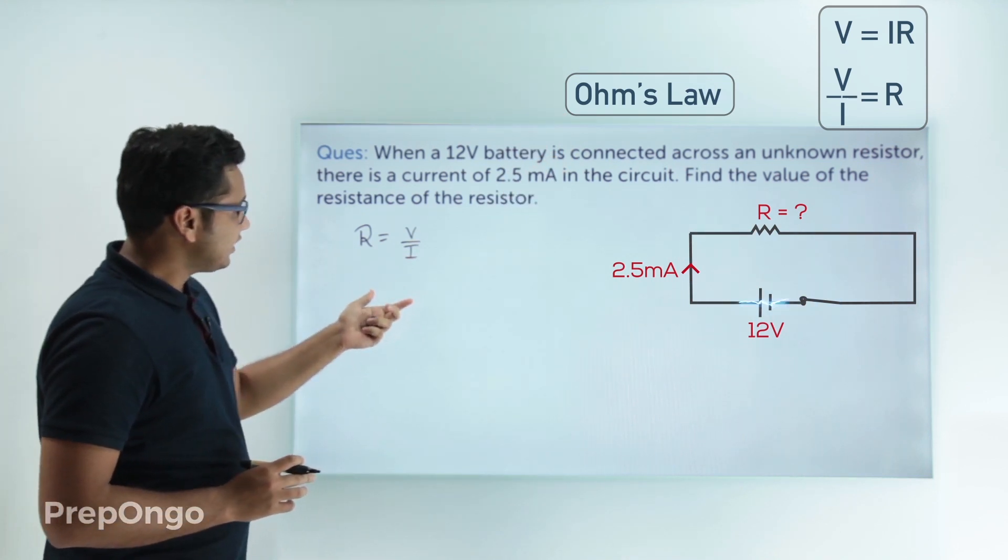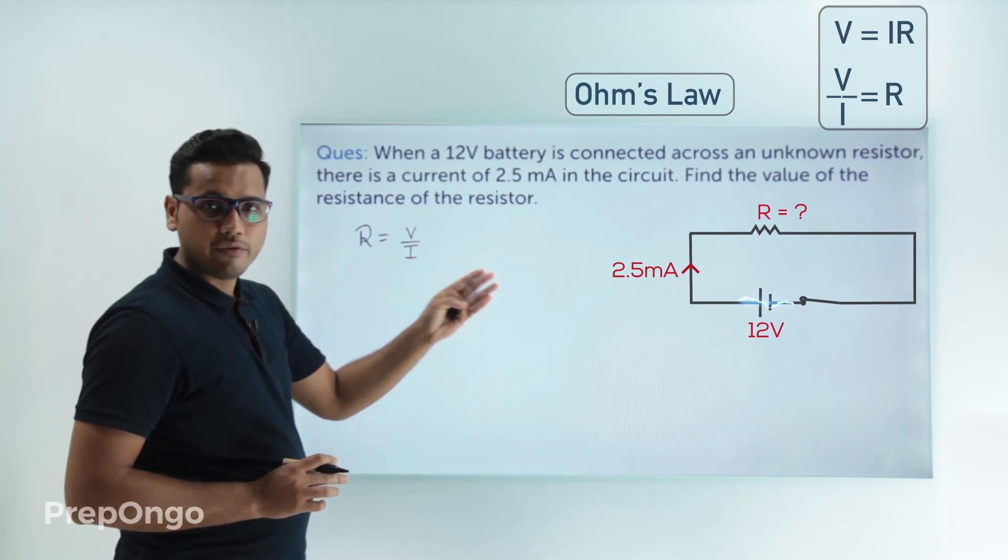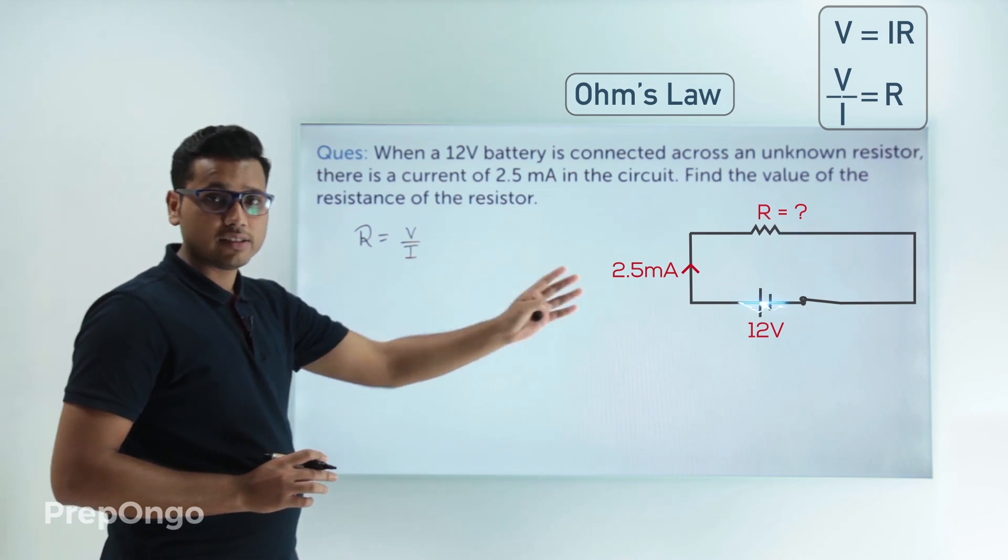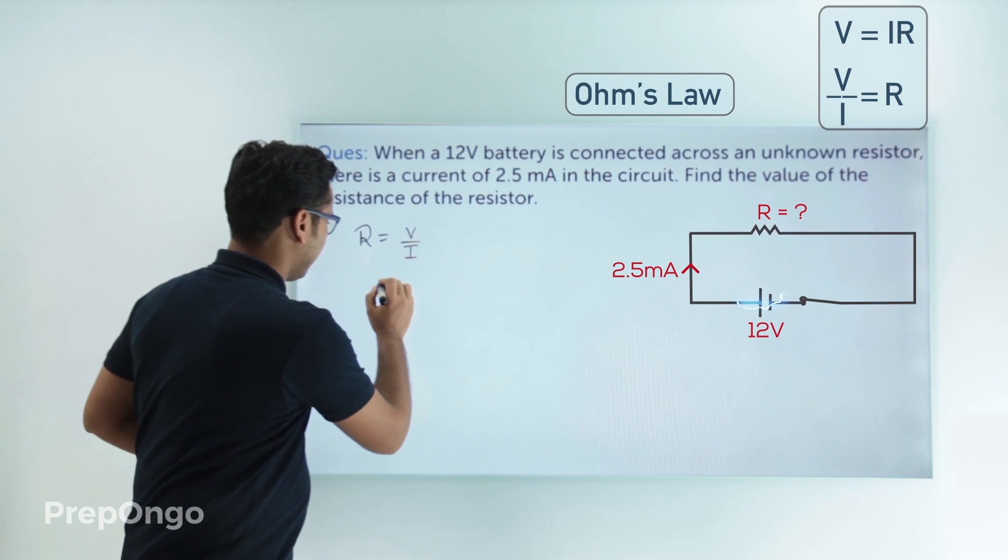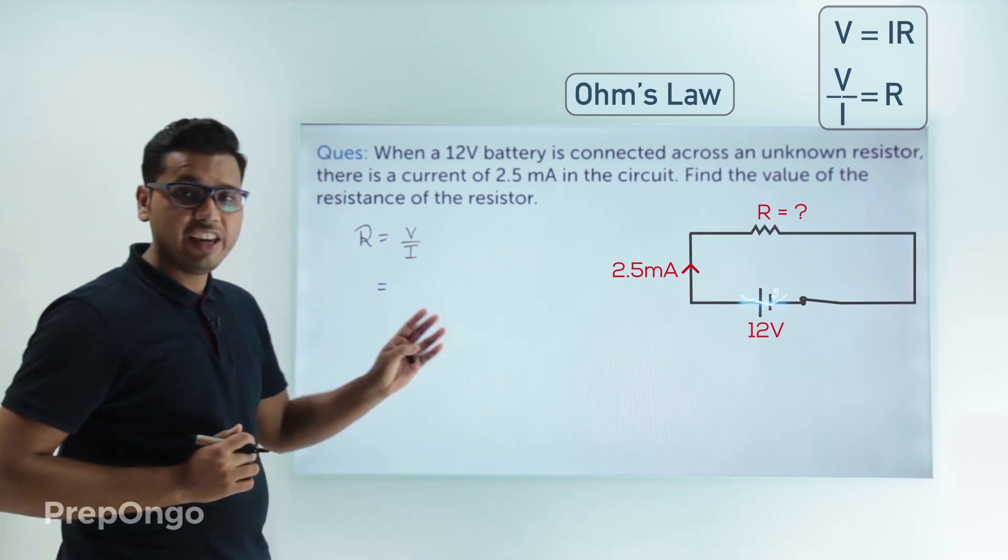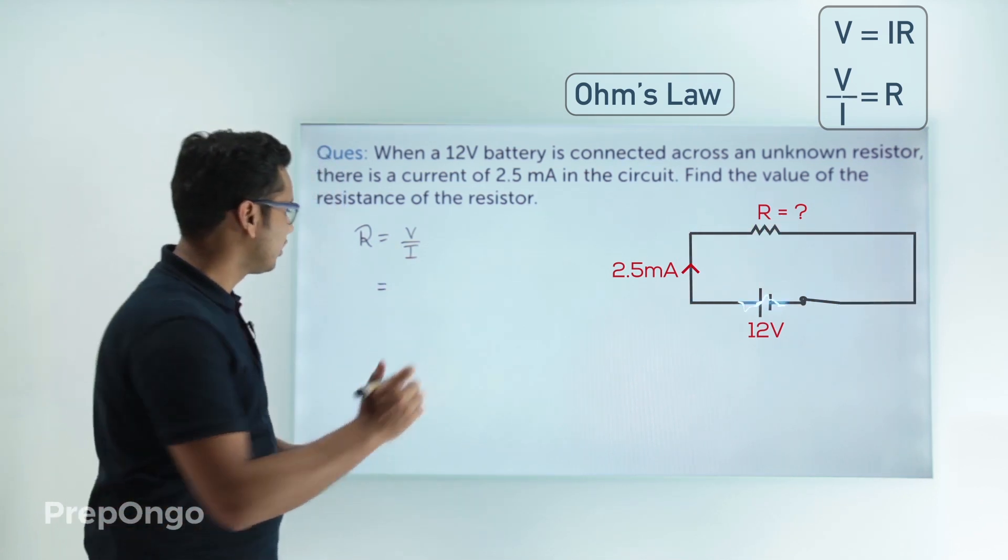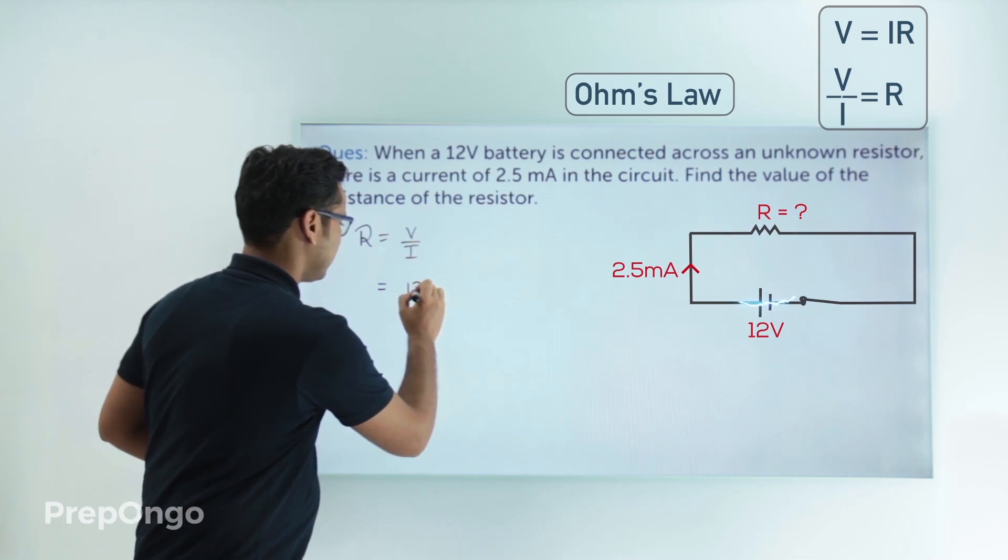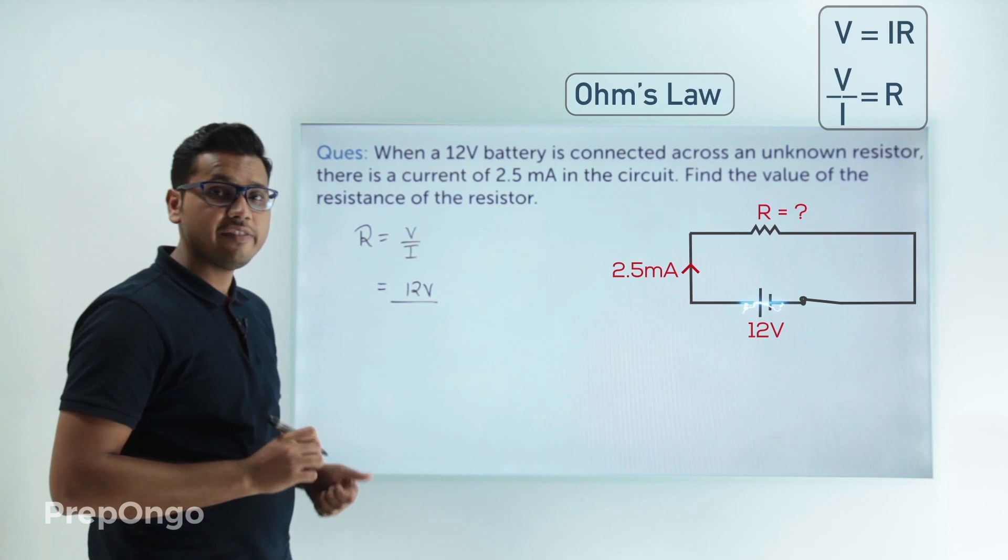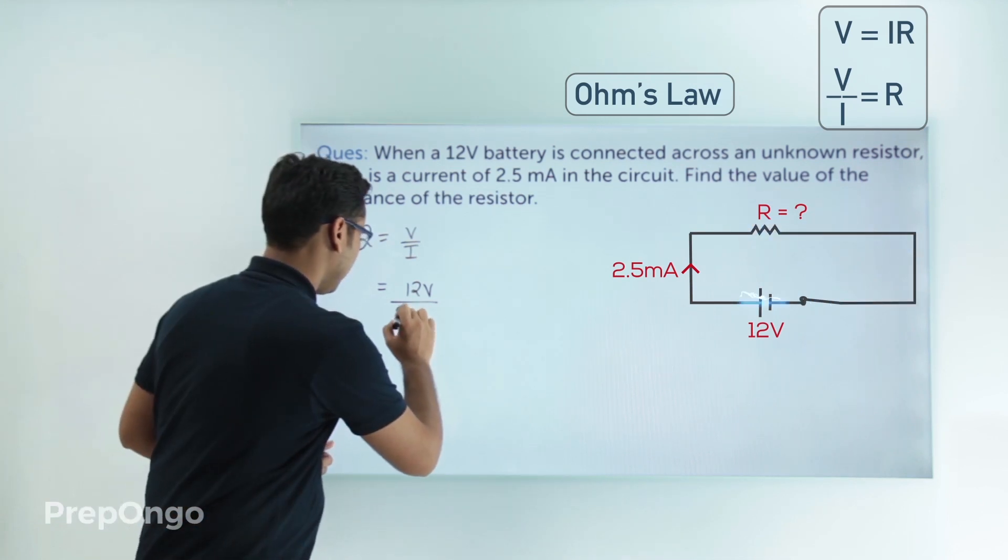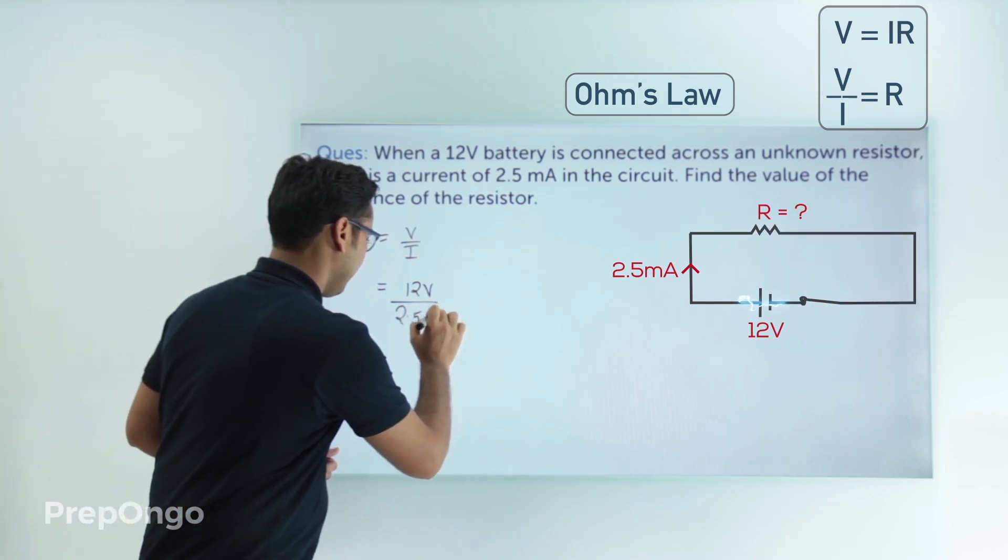We can easily put the value of V and I from this and find the value of this unknown resistance. Let's put the values. The value of V is 12 volts, so put the value 12 volts upon the value of current, which is 2.5 milliampere.